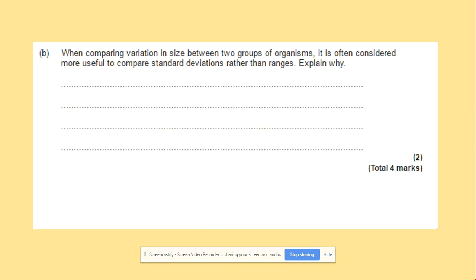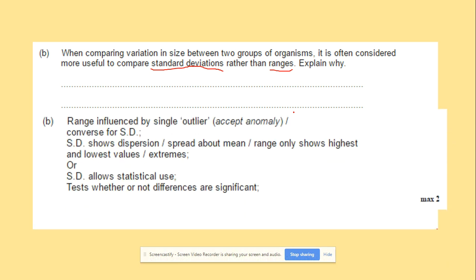Another question here. When comparing variation in sets between two groups of organisms, it is often considered more useful to compare standard deviation than range. So what is the standard deviation and what is range? Standard deviation is the spread of data around the mean, which we need to then be able to include in the answer. But range is influenced by single outlier. What's the range? The difference between the highest and the lowest. The standard deviations, it's a spread about the mean. Or what else you could say, standard deviation will allow you to use it for the statistical use. Because remember, if they overlap, there is no significant difference. If they don't overlap, there is a significant difference.